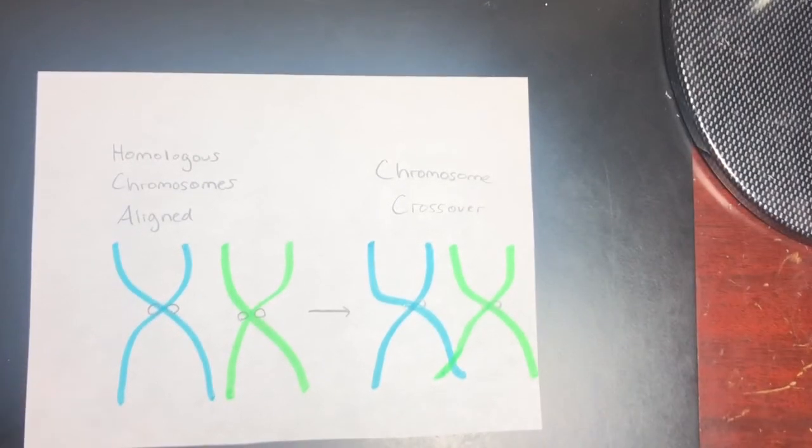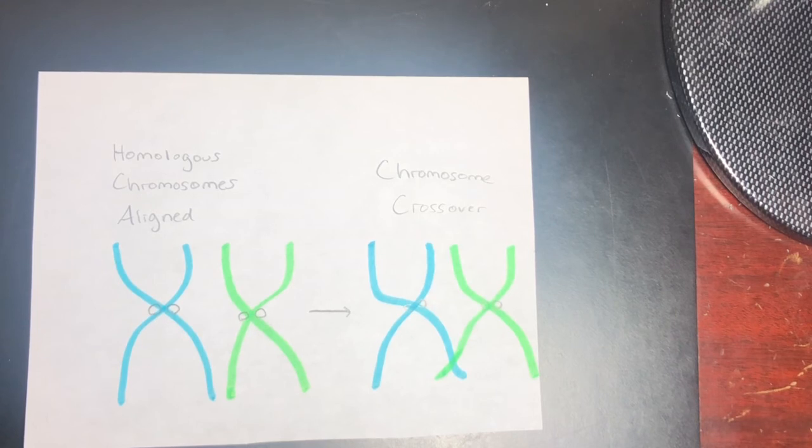Most bivalents contain more than one chiasma, indicating that multiple crossovers occur between homologous chromosomes.